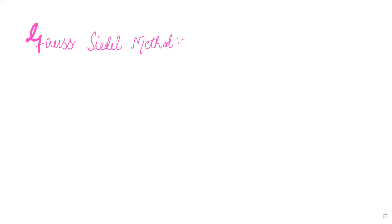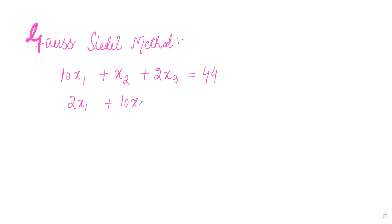As far as the Gauss-Seidel method is concerned, let me take up a problem. The system is: 10x1 plus x2 plus 2 times x3 equals 44; 2 times x1 plus 10 times x2 plus x3 equals 51; and the third equation is x1 plus 2 times x2 plus 10 times x3 equals 61.